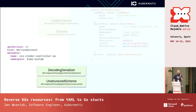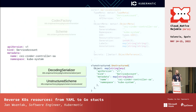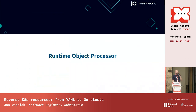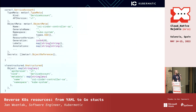Luckily, api machinery is really great and there are other packages you can use to get an unstructured object. Unstructured is another runtime object which is essentially just a map of maps of maps — recursively defined. With these two runtime objects you have essentially all the information you need to write the Go file. The second part is the runtime object processor — these are the same two objects from the previous slide, just moved to the left.